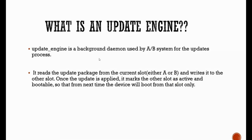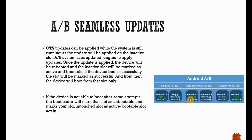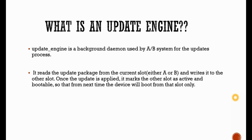What is the update engine? The update engine is a background daemon used by the AB system for the update process. A background daemon is a process that keeps continuously running in the background. All AB updates are done via the update engine. The update engine reads the update package from the current slot and writes it to the other slot. Once the update is applied, it marks the other slot as active and bootable. From partition A, it reads all the update packages and flashes those packages onto partition B. Once successful, it marks partition B as the active partition.